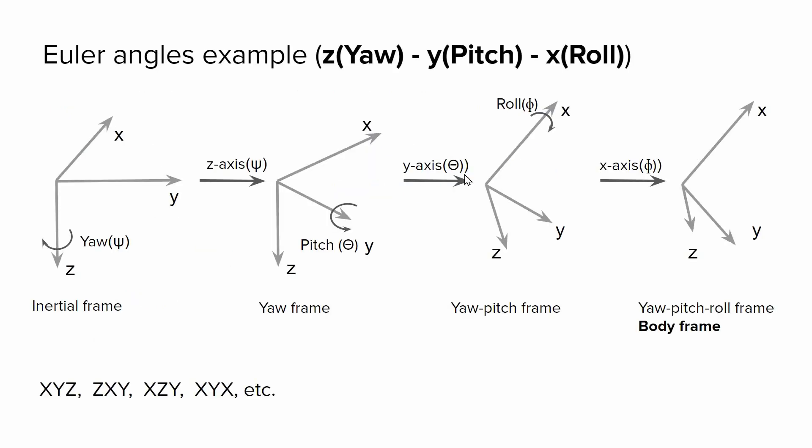And let me provide you with some example. At the beginning, we have an inertial frame with a rotation around Z axis, and we have this frame. Then we do rotation on Y axis, and we have this frame. And finally, we do rotation around X axis, and we end up with this body frame.